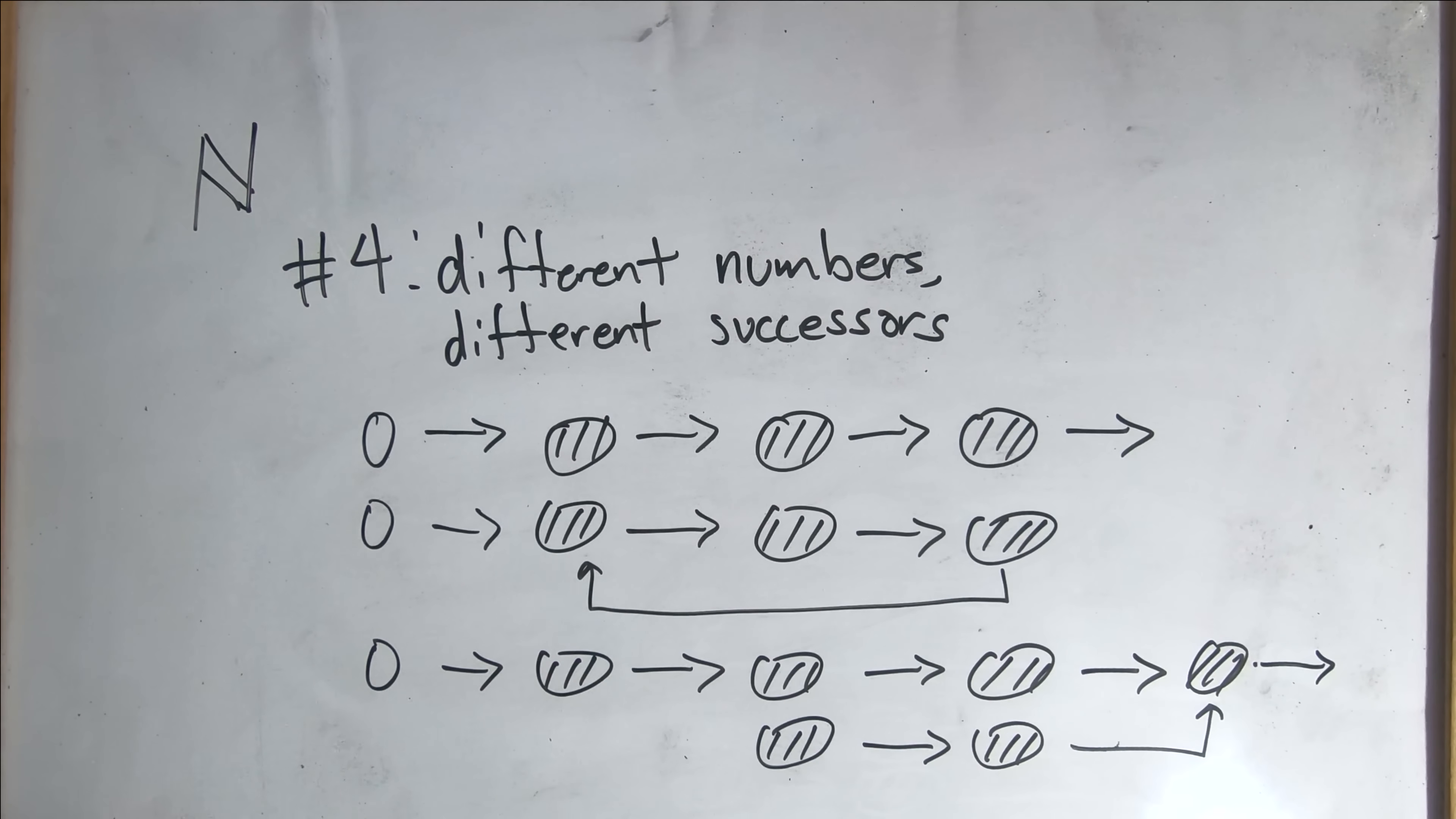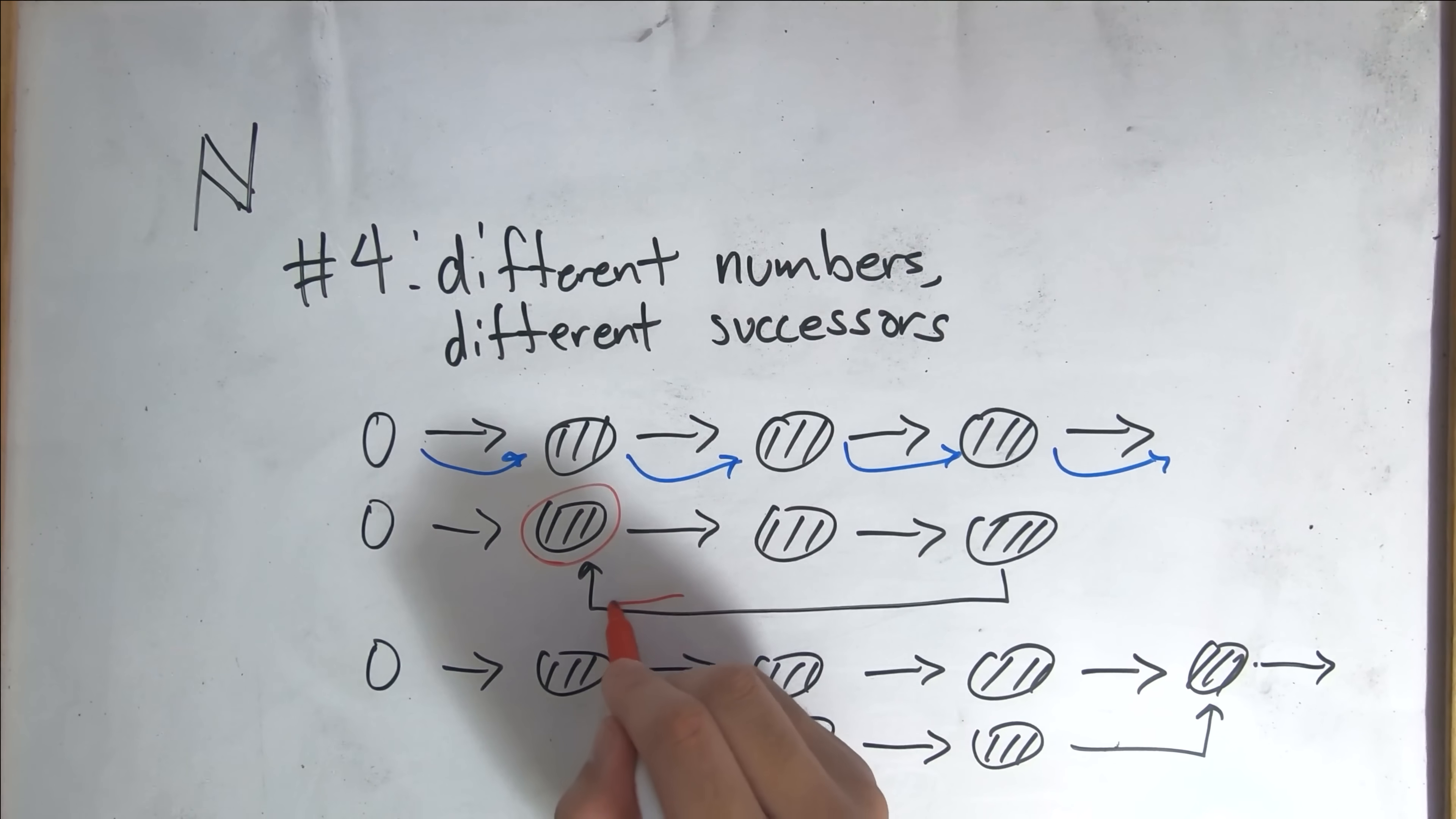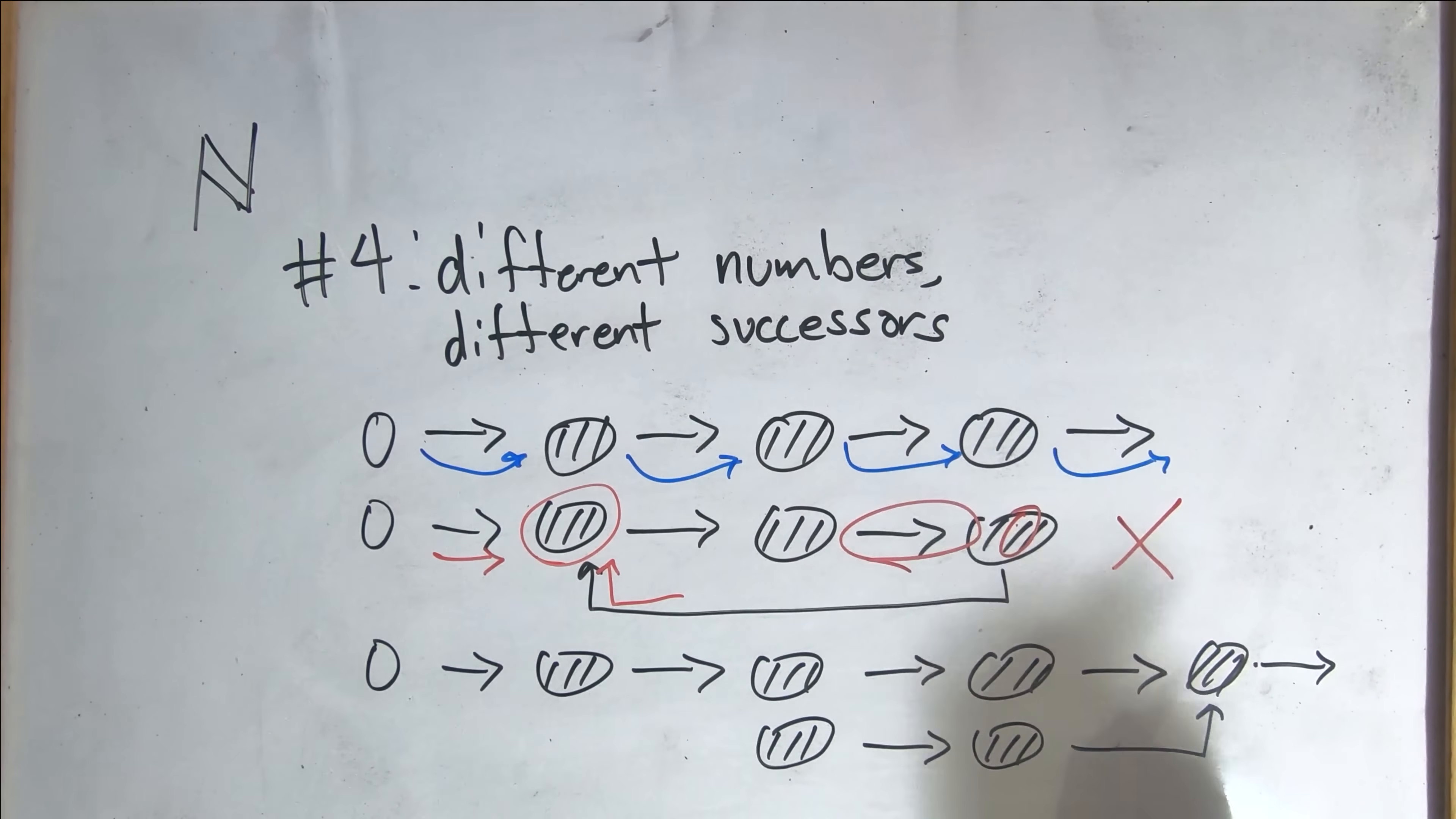Let's look at these three cases. The first case satisfies our definition. Different numbers, different successors. Each number has its own successor that does not overlap with one another, and goes on. In our second case, this is not true. For this number, there are two numbers whose successors equals the same number, which would imply that this has to be equal to zero. But zero cannot have a successor. So this example cannot be true.